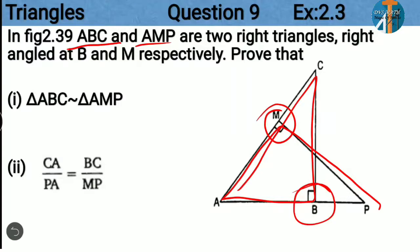We have two sub-questions. One is to prove that triangle ABC is similar to triangle AMP, and the second is that CA by PA is equal to BC by MP.